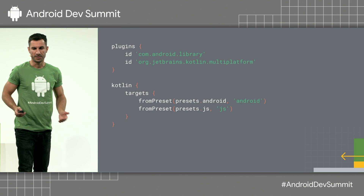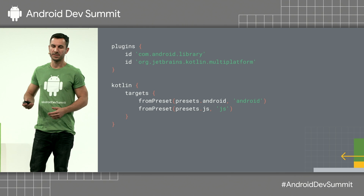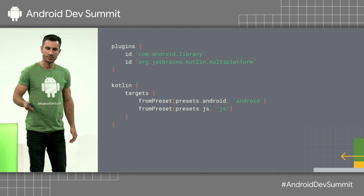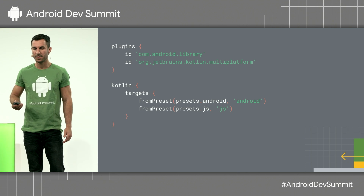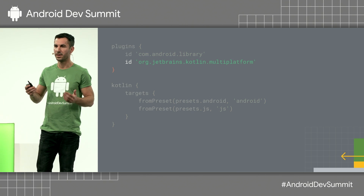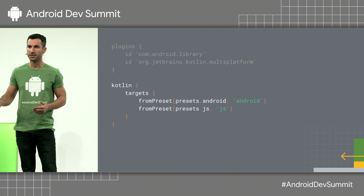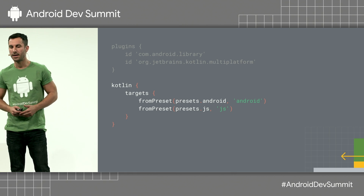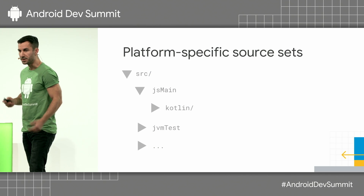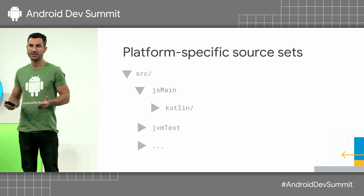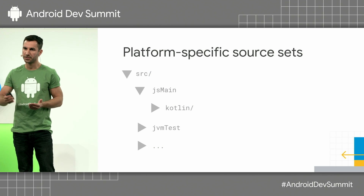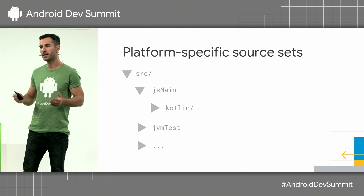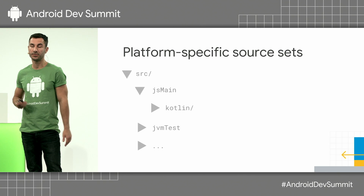So how do we actually get started with this? Kotlin 1.3 introduces a new project structure and a new plugin called Kotlin Multiplatform. If you apply that to any of your modules, you can then select from a set of presets to target any of these platforms. For example, here I'm targeting an Android library and a JS target. When you add these to your module, it automatically creates source sets for each of these platform-specific Kotlin files. So if you put your Kotlin files in the JS main folder, they will get compiled or transpiled to JavaScript files.